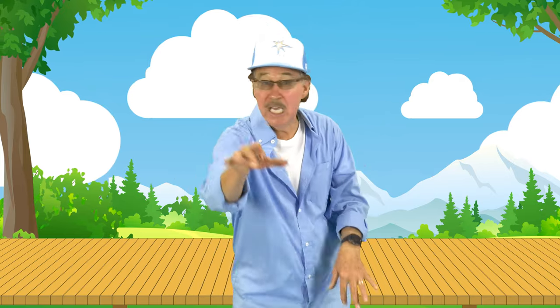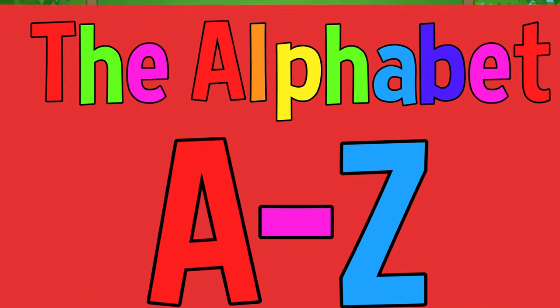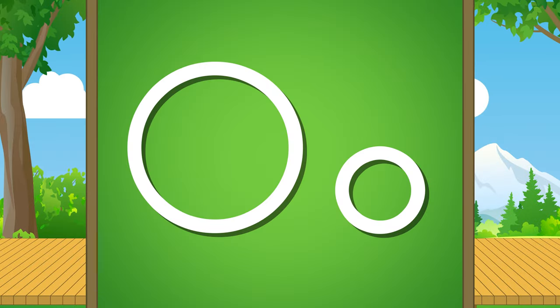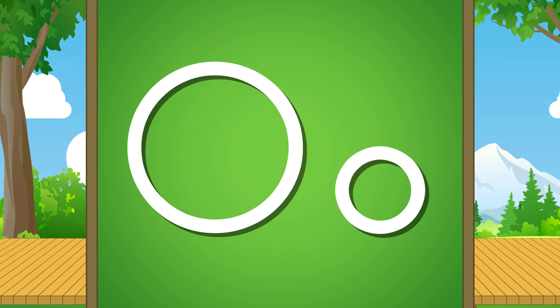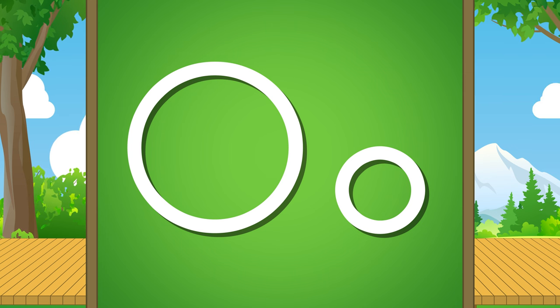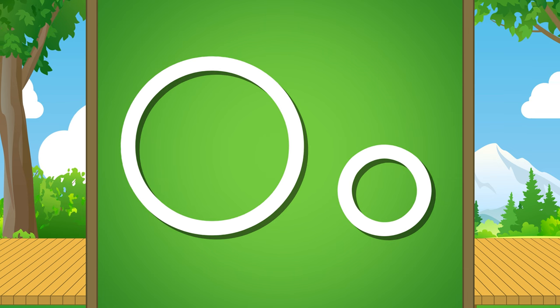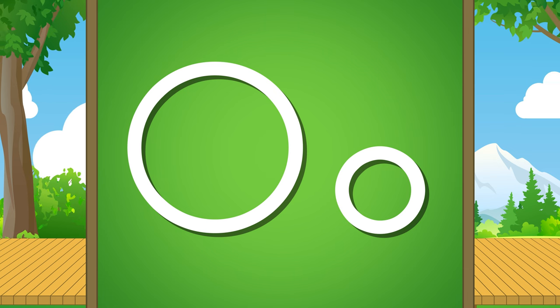Learn the letter names, letter sounds, how to write them down. Hear the letters used in words as consonants and vowels. This is letter O and it looks like this. Letter O is a vowel in the alphabet.